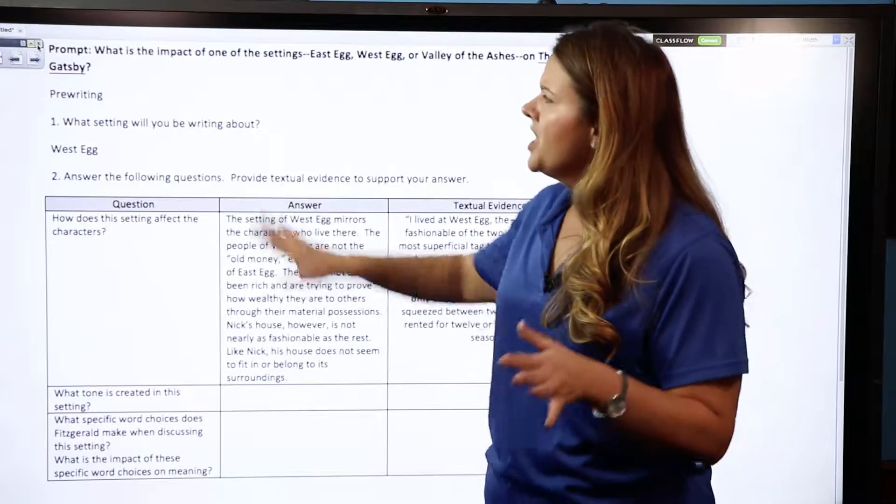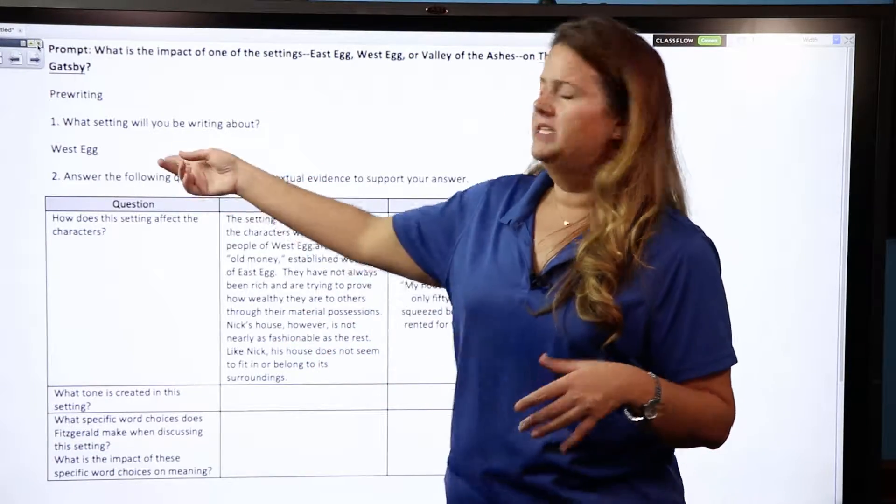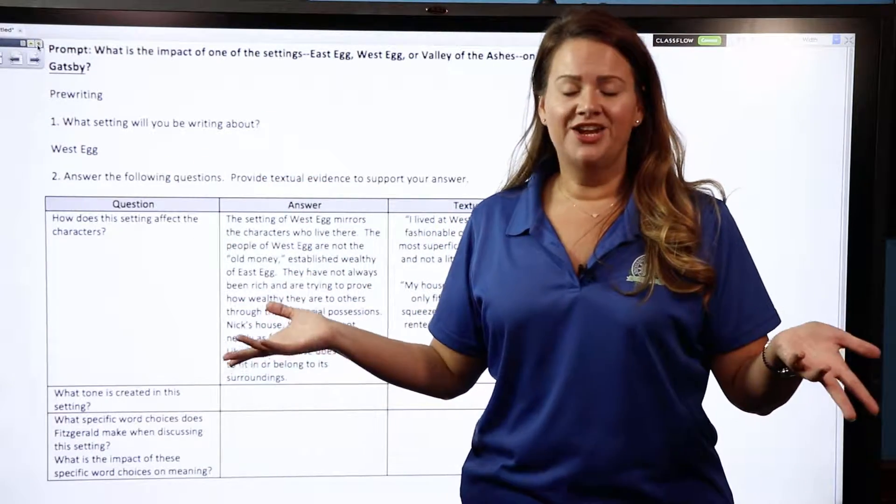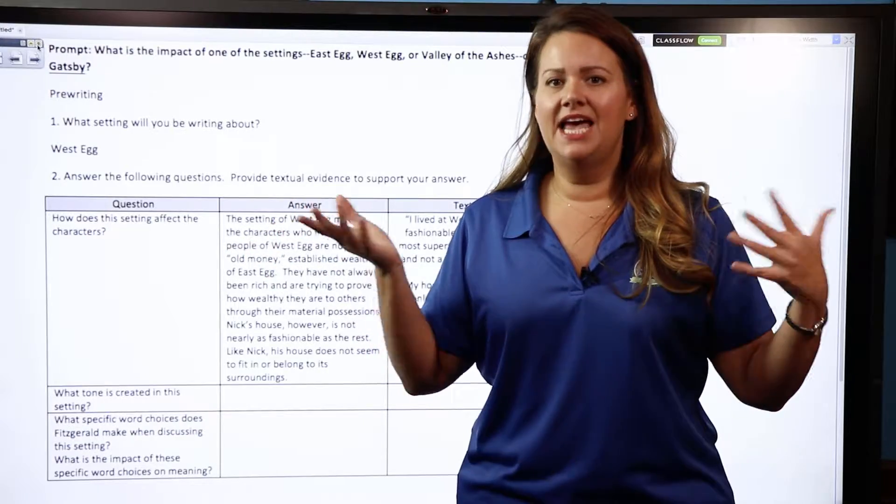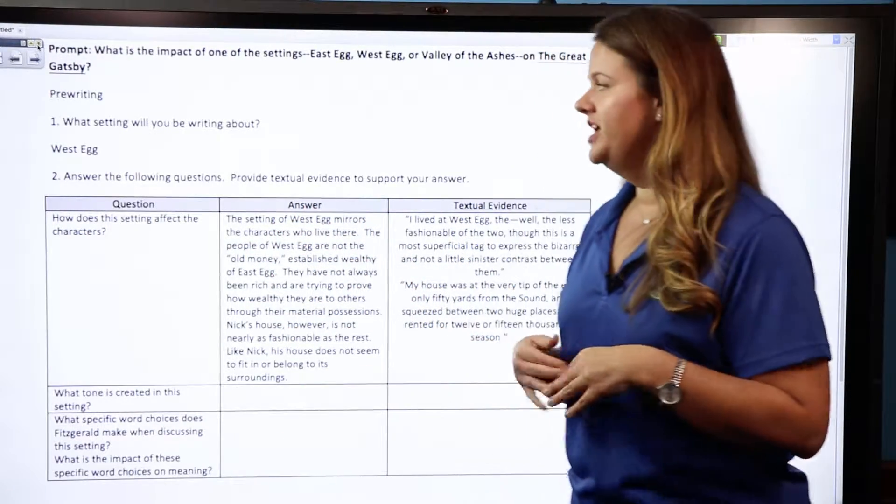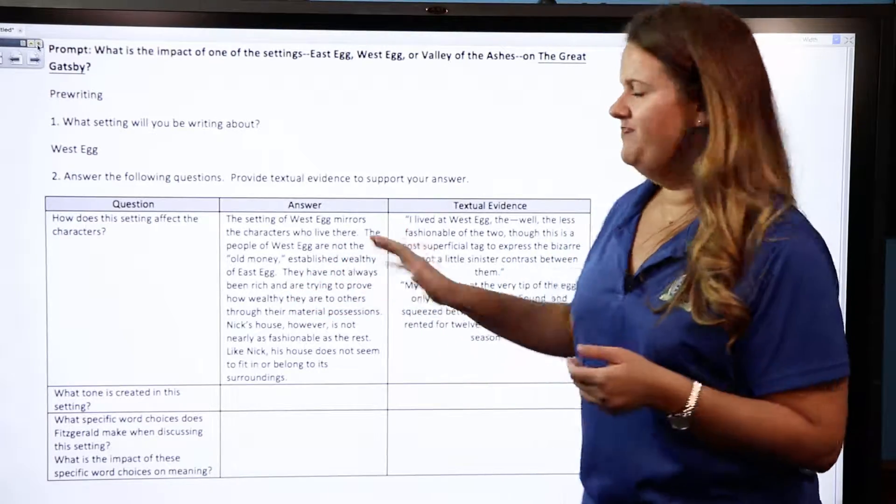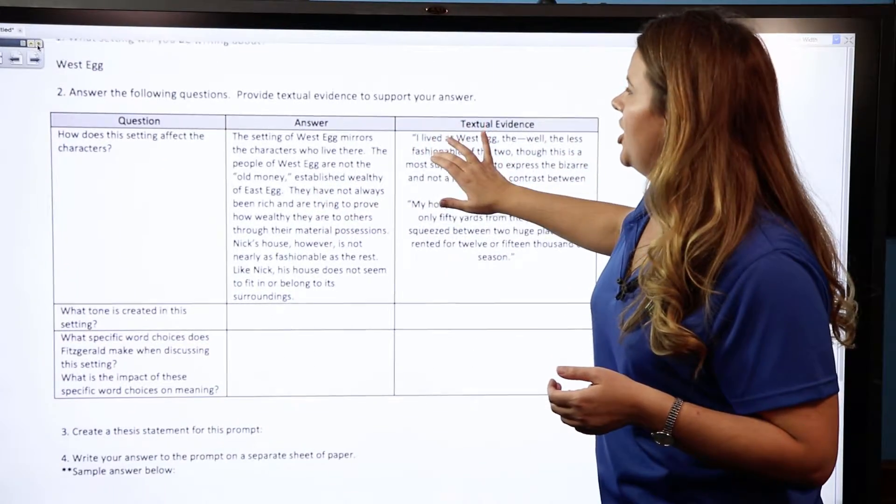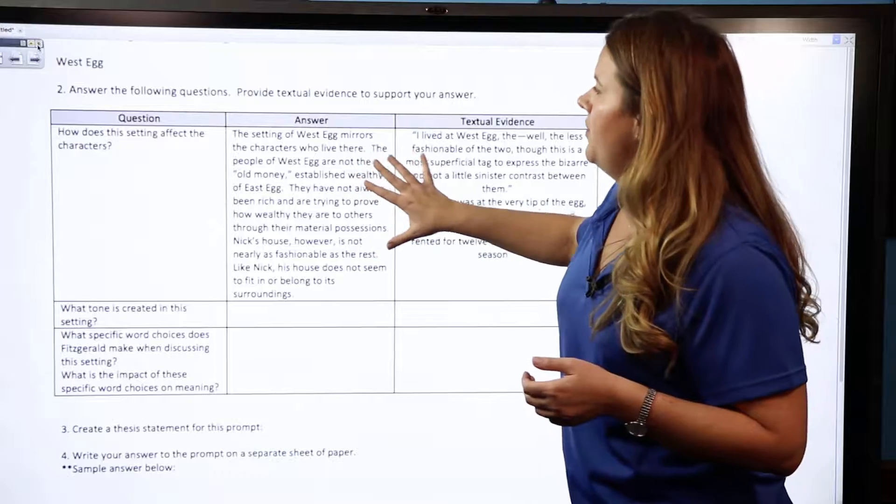So when it comes time to write, you've got the bulk of the information already here for you. The first thing you need to do on this document is simply tell us which setting are you going to work with: East Egg, West Egg, or the Valley of Ashes? Three really distinct locations. Choose one.